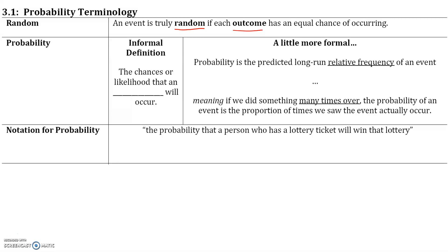Here is an informal definition: the chances or likelihood that an event will occur. A more formal definition: probability is a predicted long-run relative frequency of an event.